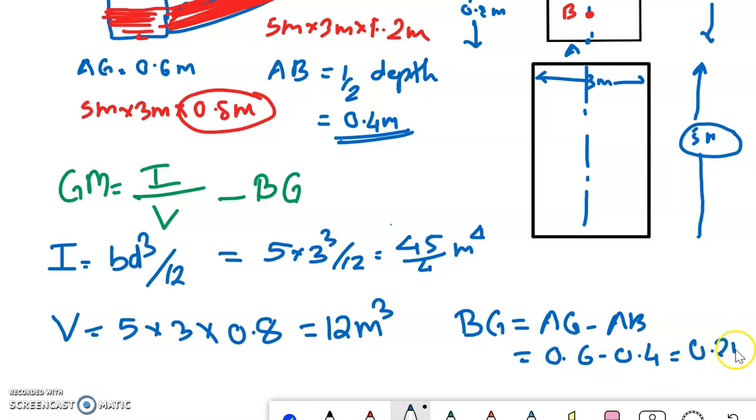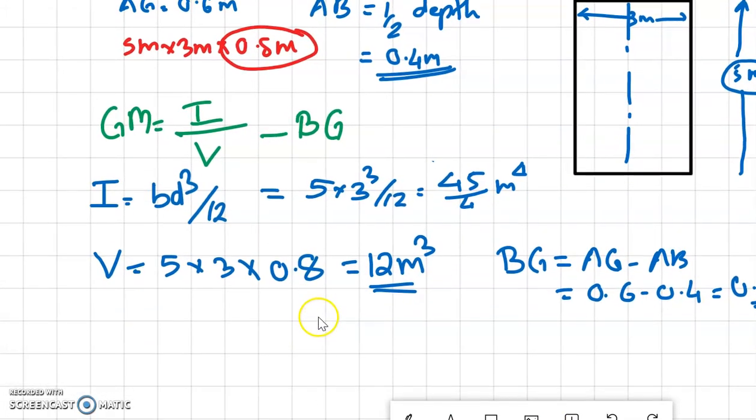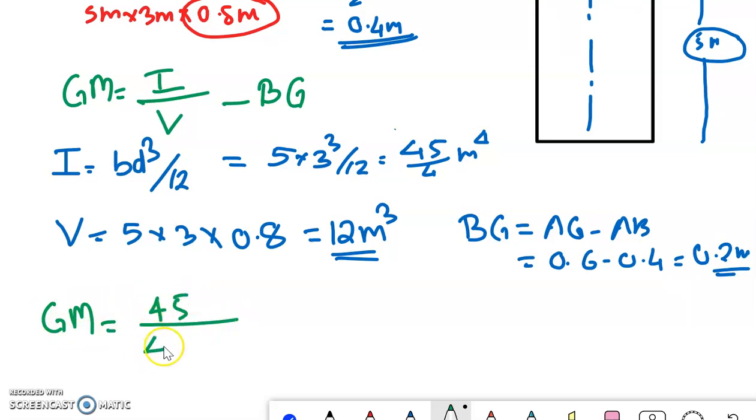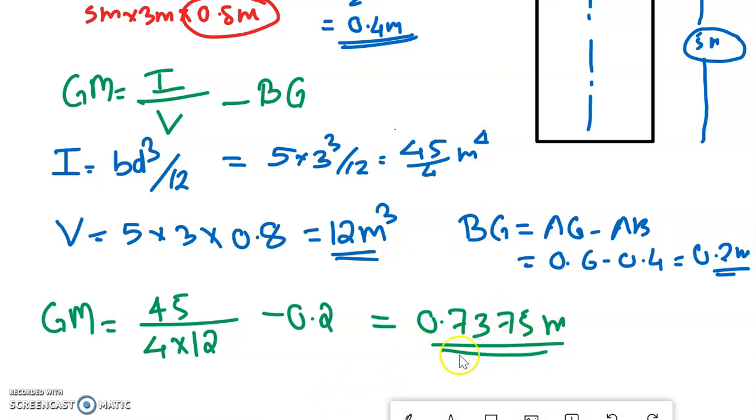Now if you want to show GM, then GM is equal to I by V. So 45 by 4 divided by 12 minus 0.2. So this will be equal to 0.7375 meter. So this is the answer for metacentric height.